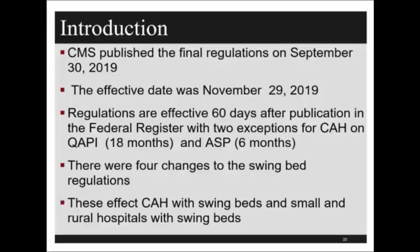The four changes affect critical access hospitals with swing beds, as well as small and rural hospitals. A critical access hospital has 25 beds or less. A small hospital can have up to 200 beds, and a rural hospital up to 100 beds. A critical access hospital also cannot be any closer than 35 miles to the next acute care hospital — for example, if you have a critical access hospital in North Platte, Nebraska, no acute-level hospital can be within that 35-mile radius.